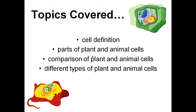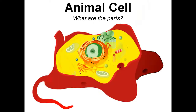The topics covered were: cell definition, parts of plant and animal cells. We then proceeded with the comparison of plant and animal cells, and finally we also saw some different types of cells — plant and animal cells.